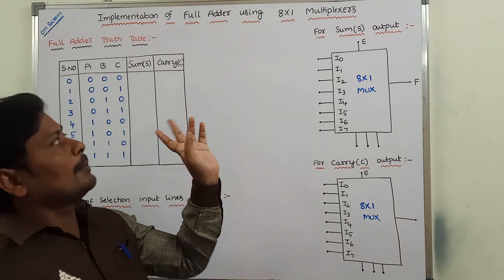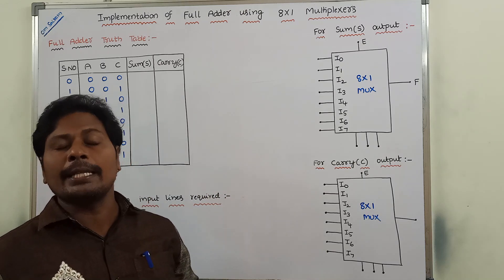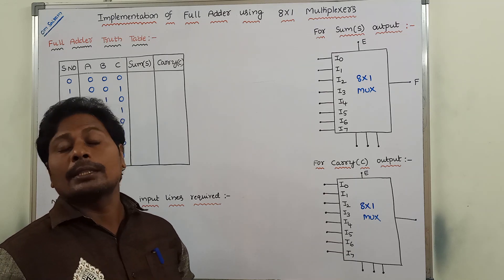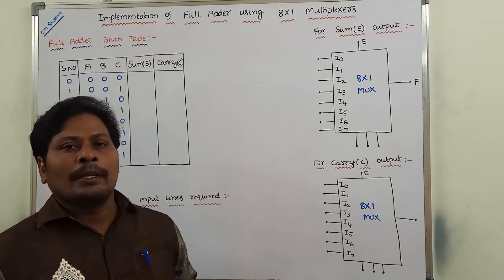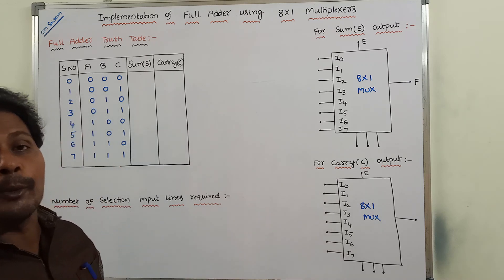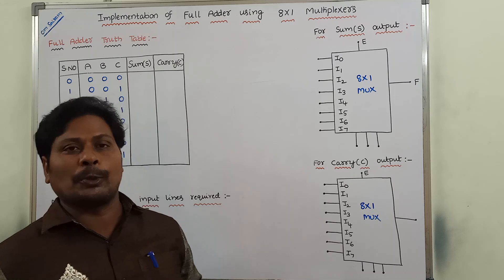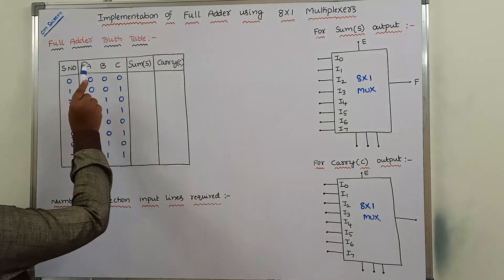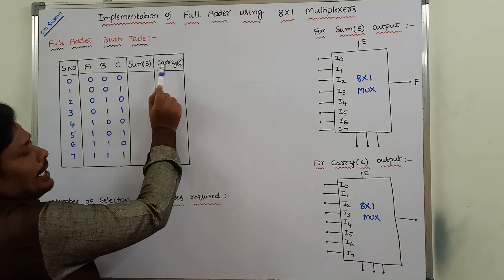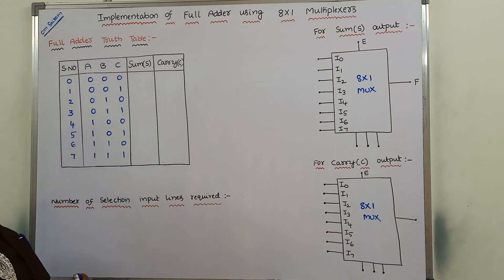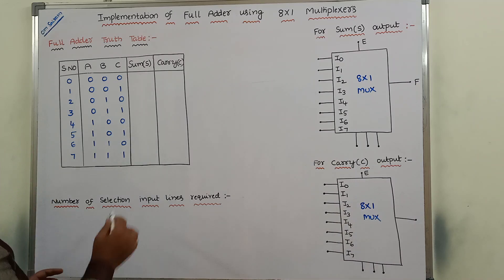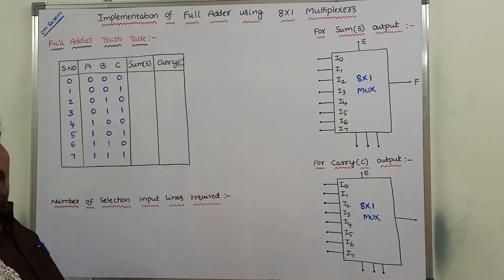Before going to the implementation, first of all, what is a full adder? A full adder is a combinational circuit that is used for adding three bits. A full adder can take three inputs and produce two outputs. The three inputs are A, B, and C, and the two outputs are sum and carry. These three are the input variables and these two are the output variables. Next, this is the functional truth table of a full adder.